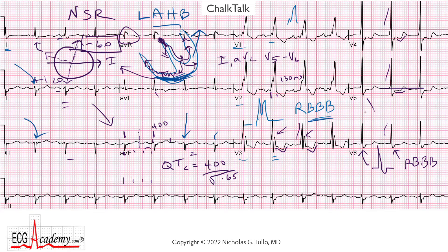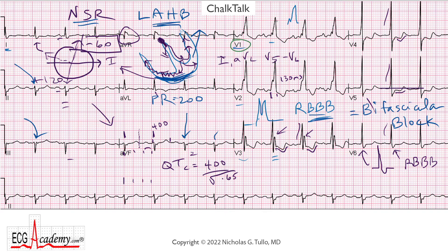Taken together with the right bundle branch block, you have to call this a bifascicular block. Otherwise, the STs look okay and there are no pathological Q waves anywhere. To pull this all together, you're dealing with a normal sinus rhythm with a right bundle branch block and a left anterior hemiblock. There's also a borderline prolonged QT interval and non-specific ST-T wave abnormalities. One last thing to notice: the P-wave in V1 has a biphasic appearance with an initial positive phase and then a big negative phase — the negative part is about one box wide and one box deep — so you might consider left atrial abnormality or left atrial enlargement. Things will sometimes pop off the page right away, but always go back and take the whole tracing step by step, looking at the rhythm, intervals, axis, and so on, so that you don't miss anything.